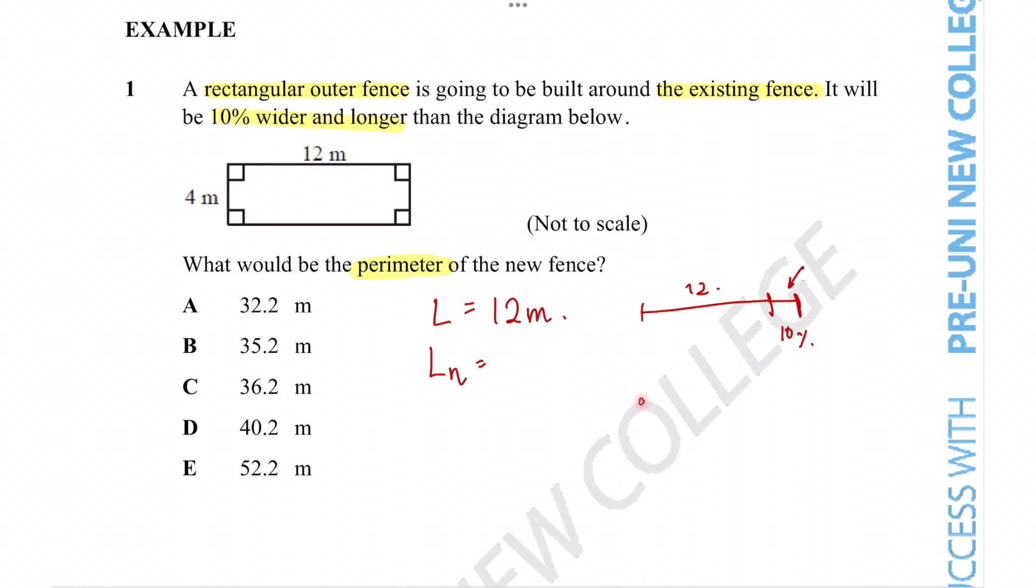This diagram helps us understand conceptually what's going on. When we're making it 10% longer, we've got the original 12 meters—that's 100% of the original length. But we also add in another bit equal to 10%. So the new length is the addition of these two percentages, meaning it's 110% of the original, not just 10%.